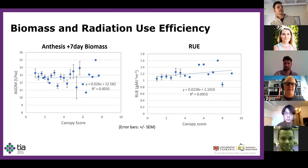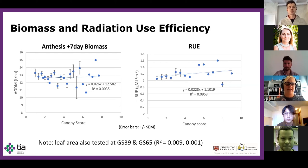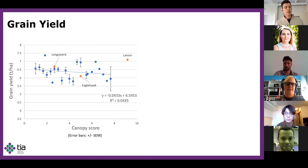The results suggest that canopy architecture had little to no effect on anthesis-plus-seven-day biomass, nor radiation use efficiency for the period assessed. Leaf area, also investigated on a subset of plots, bore no significant relationship with canopy score either. A wide variation in flowering date may be a source of error not accounted for in the biomass results, as anthesis was spread over a window of 20 days. Unexplained variation in radiation use efficiency may be present as only global radiation was used for its calculation rather than photosynthetically active radiation (PAR). The spread of data also increased as canopy score increased toward more floppy types, and grain yield similarly appeared to have little to no relationship with canopy architecture in this instance.